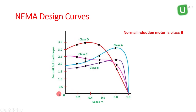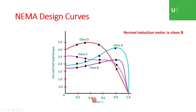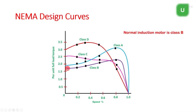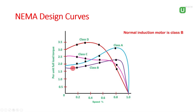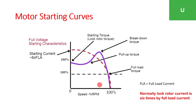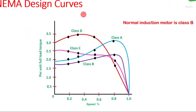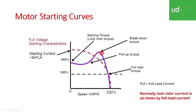The Y-axis is in per-unit of full load torque and the X-axis is speed as a percentage — 100%, 80%, 40%. A normal fire induction motor uses a Class B curve type. You can see it in purple color — this is the Class B motor starting torque curve.